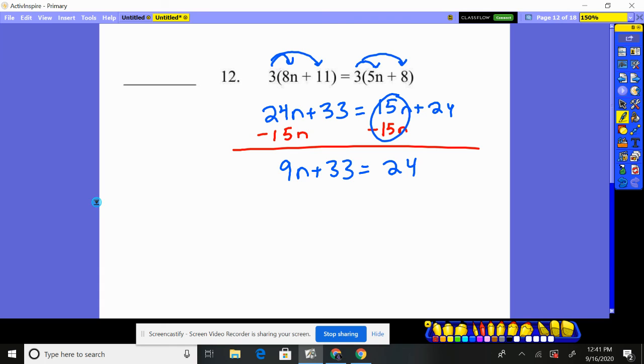And now I'm going to move my 33 over to be on the other side. That way, I'll have all numbers on one side and variables on the other. So I'm going to subtract 33, and that'll leave this variable by itself on that side. And over here, we get negative 9. Now, how do I get rid of multiplying by 9? Divide by 9. And we get n's value being negative 1 in this problem.